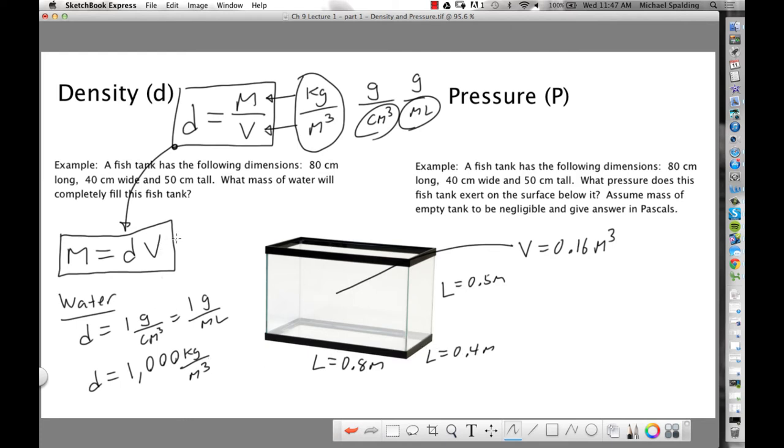Okay. So, how do we solve this? So, we're plugging in here. The density of water, 1,000 kilogram cubic meter. Volume, we talked over here, 0.16 cubic meters. The cubic meters cancel. The mass of the water is 160 kilograms. All right. Simple enough, right?